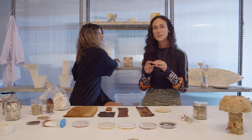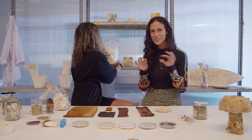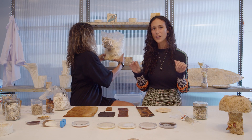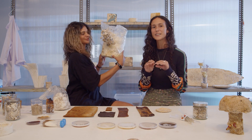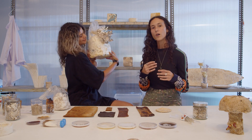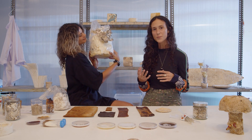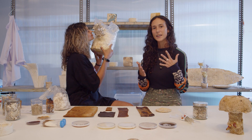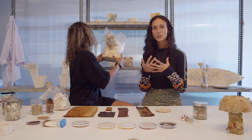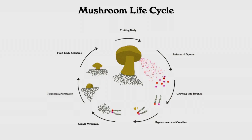Once they start growing these little hairs — these very fine threads that we call hyphae — they start to layer on top of each other, interconnect, break down nutrients, break down chemicals, and become this very large organism that we call mycelium.